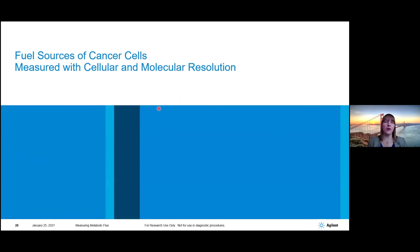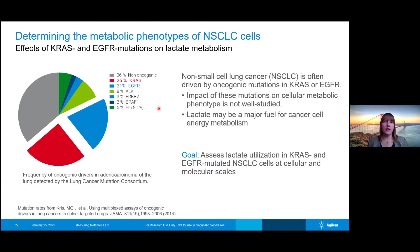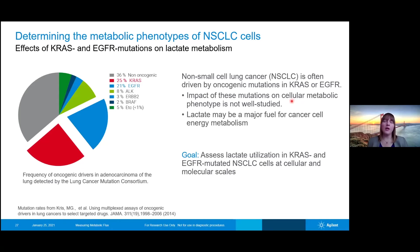In the third example, I'll be covering some fuel sources for different cancer cells, again at both cellular and molecular resolution. In this particular example, we'll be looking at the metabolic phenotypes of non-small cell lung cancer cells. It is well shown in the literature that there are some predominant mutations — in particular, there's the KRAS mutant that happens in about a quarter of these types of cancers, and then the EGFR mutant that happens in about 20% of these cells. There is some expectation that these mutations will have an impact on cellular metabolic phenotype, and in particular there's some suggestion that some of these cells may be using lactate as a major fuel source.